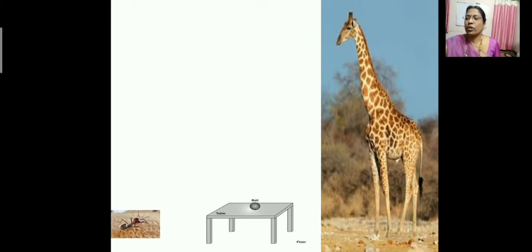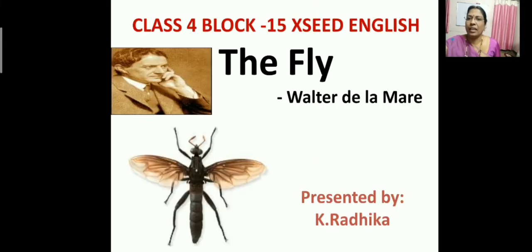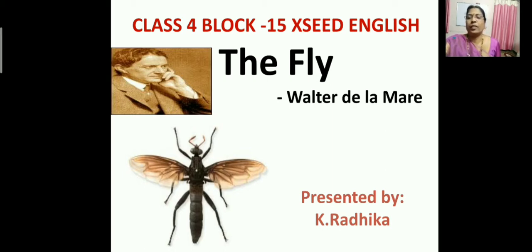Today we are going to discuss a poem called The Fly, Block 15, Class 4, Exceed English. The name of the poem is The Fly. It is written by Walter de la Mare. This poem tells us how the world appears to a fly — the poet wrote the poem from the perspective of a tiny fly. Before we read the poem, let us know about the poet.